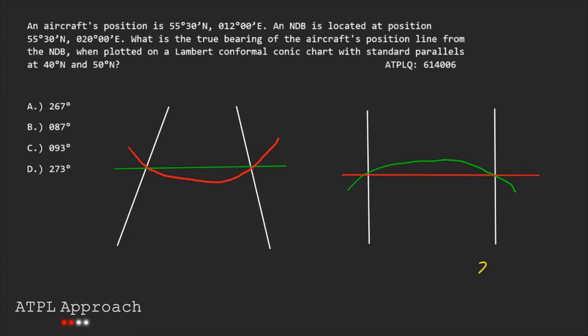Now let's label it all up. The NDB is more east, so we'll be on the right side of both the diagrams and the aircraft is on the left side. And both the horizontal lines will be at 55 degrees 30 minutes. So there's the NDB and aircraft on both the drawings.